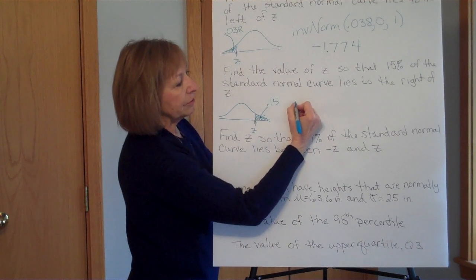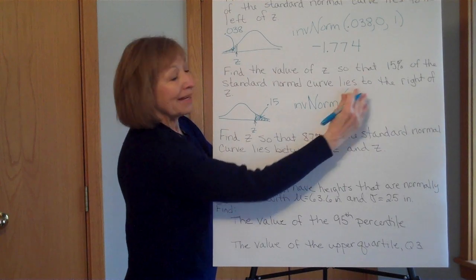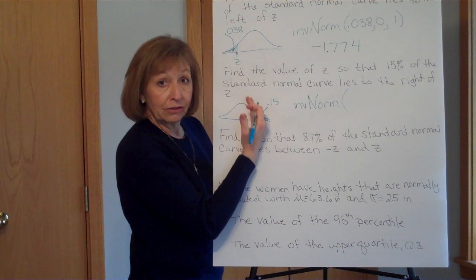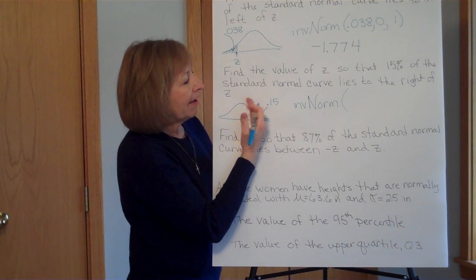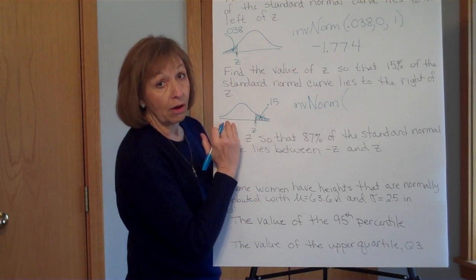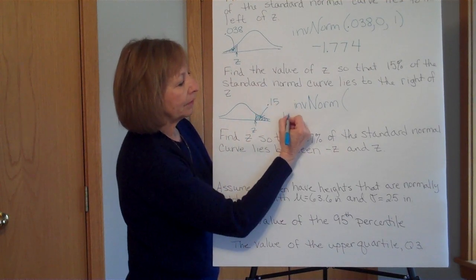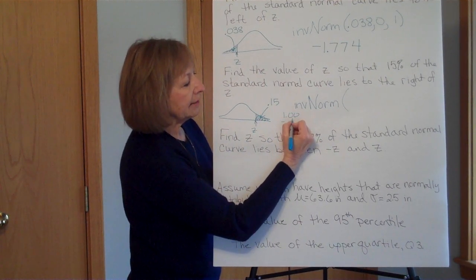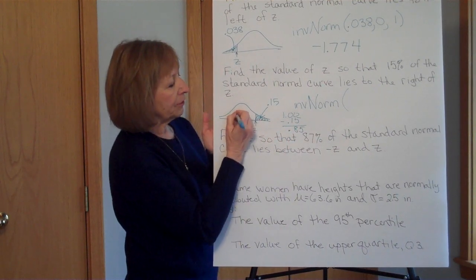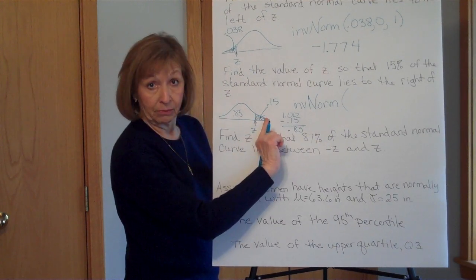So I'm going to do the inverse norm again. But the input they want is area left of the cutoff, the vertical line. So if I've got 15% to the right, the entire amount is 100% or 1. I have to take 1 and subtract that 0.15 to get 0.85 for how much would be left of this vertical line if 15% were right of it.